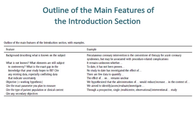Outline of the main features of the introduction section, with examples. The background should describe what is known on the subject — for example, percutaneous coronary intervention is the cornerstone of therapy for acute coronary syndromes, but may be associated with procedure-related complications. Address what is not known and what elements are still subject to controversy. Cite any existing data, especially conflicting data that indicate uncertainty, such as 'it remains unknown whether' or 'it has not been proven' or 'no study to date has investigated the effect of.'